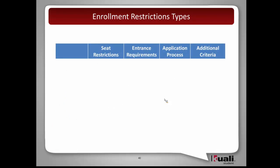Next, restriction types. We heard about different levels of restrictions on how or when a student can enroll into a program. We heard about seat restrictions — limiting the number of students enrolled in a program at any one time. For instance, a cinema school might have a limited number of editing bays, so they'd want to limit the number of students. There are also entrance requirements — more system-evaluated requirements that students might need to meet, such as a number of courses completed or credits completed.